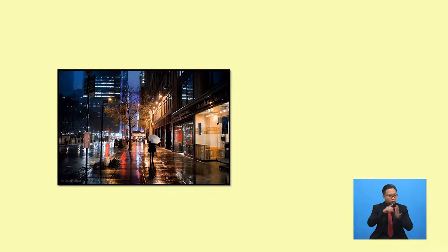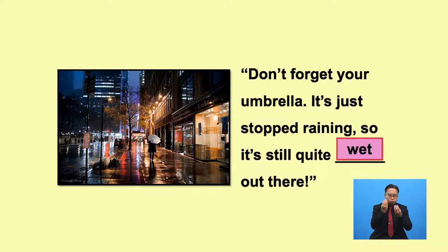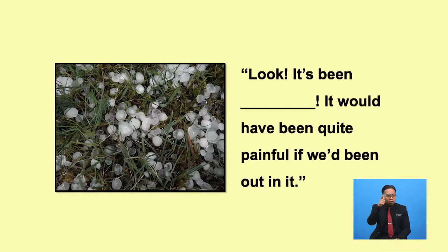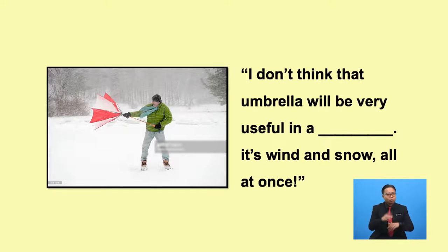What's the answer for the next picture? Don't forget your umbrella — it's just stopped raining, so it's still quite... out there. Yes! It's wet! Next: it's been hailing — it would have been quite painful if we'd been out in it. Did you see the picture of hailstones? So the answer is hailing. And for the last one, I don't think that umbrella will be very useful in a blizzard. It's wind and snow all at once — when we have wind and snow at the same time, we call it blizzards!